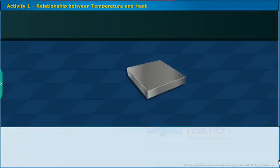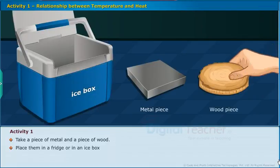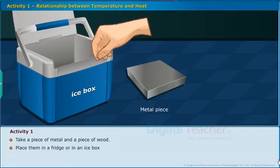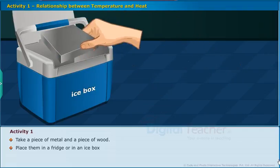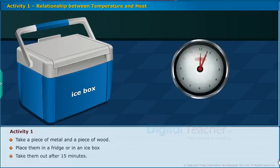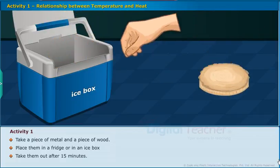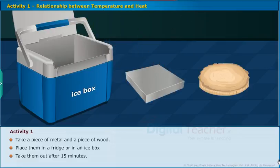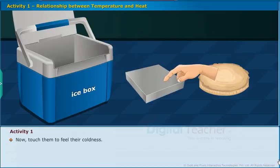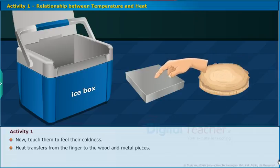Let us perform an activity for the relationship between temperature and heat. Take a piece of metal and a piece of wood. Place them in a fridge or in an ice box. Take them out after 15 minutes. Now touch them to feel their coldness. Heat transfers from the fingers to the wood and metal pieces.